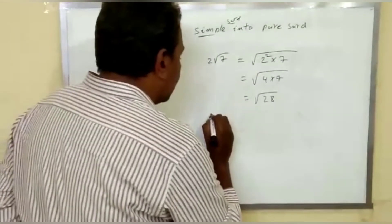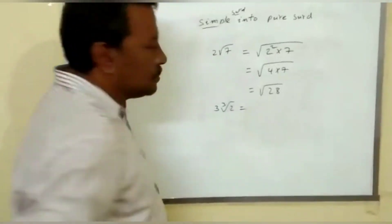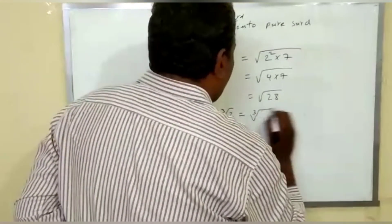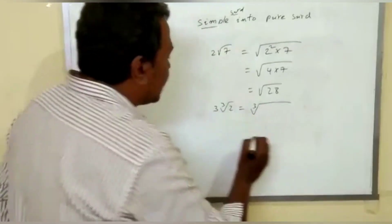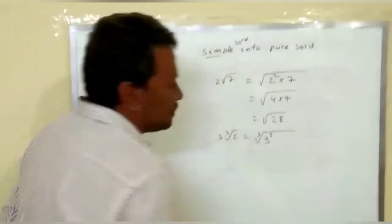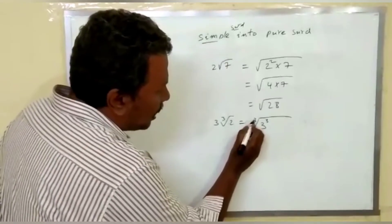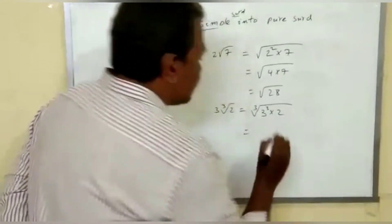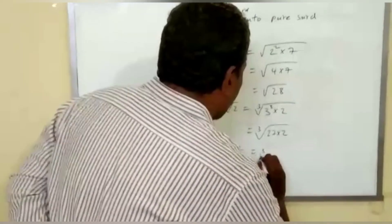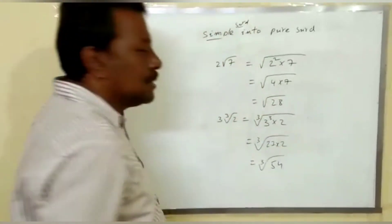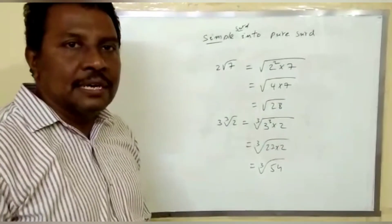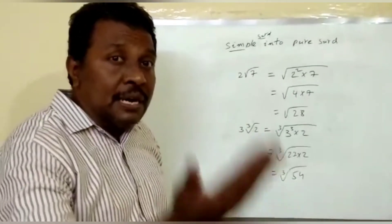One more example: 3 cube root of 2. This is a simple surd. To convert it to a pure surd, write cube root of — push the 3 inside the radical sign and raise it to the power equal to the order, which is 3. So 3 cubed is 27, giving cube root of 27 into 2, which is cube root of 54. This is how we convert a simple surd into a pure surd. In the next section we will discuss how to convert a pure surd into a simple surd.